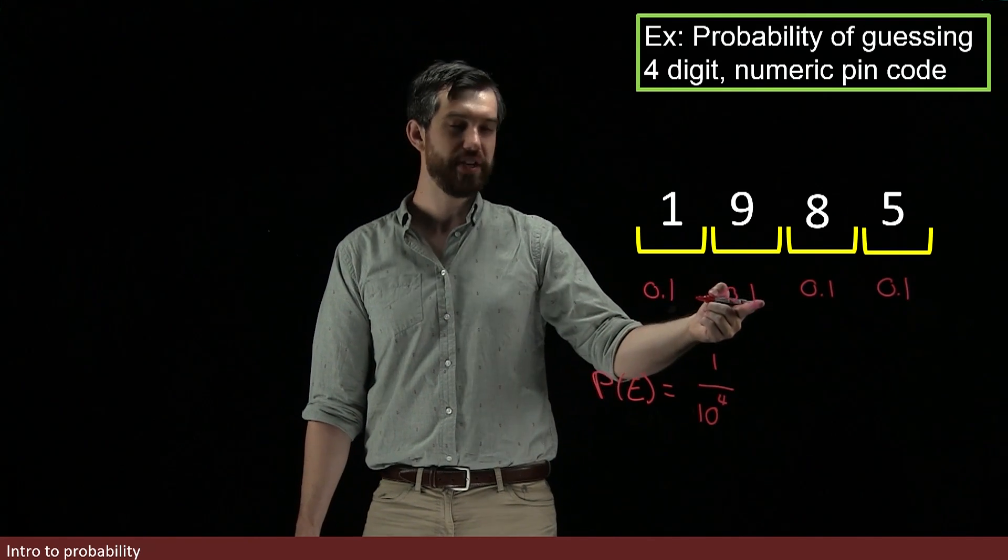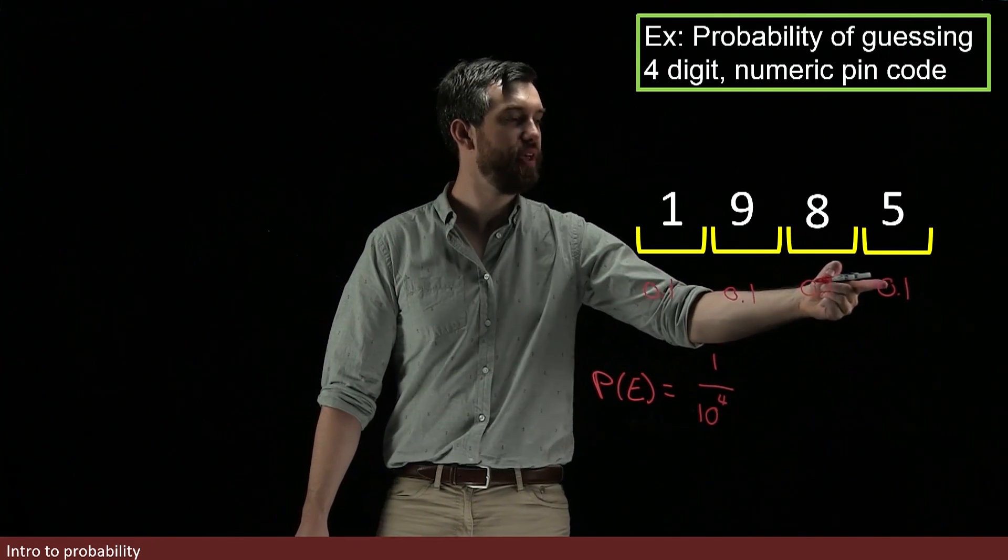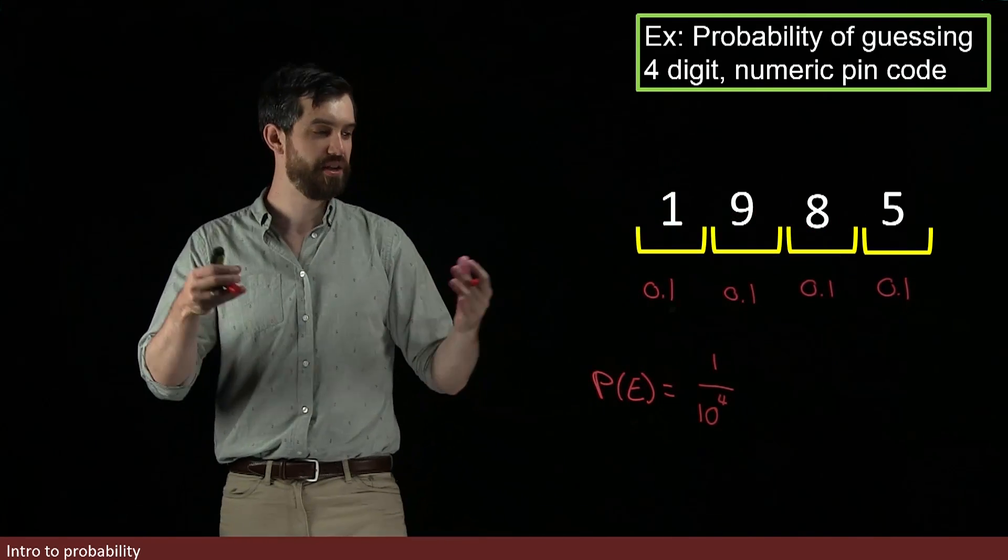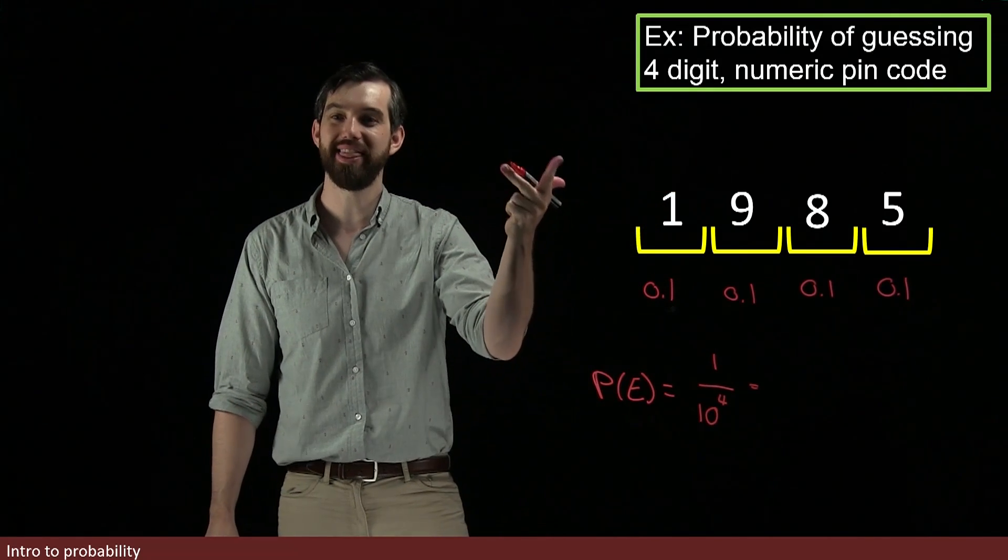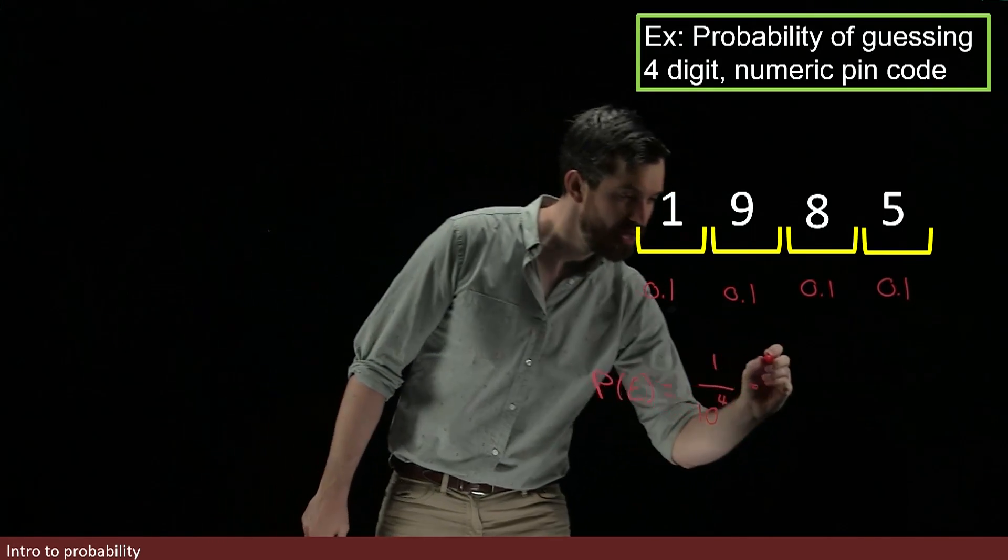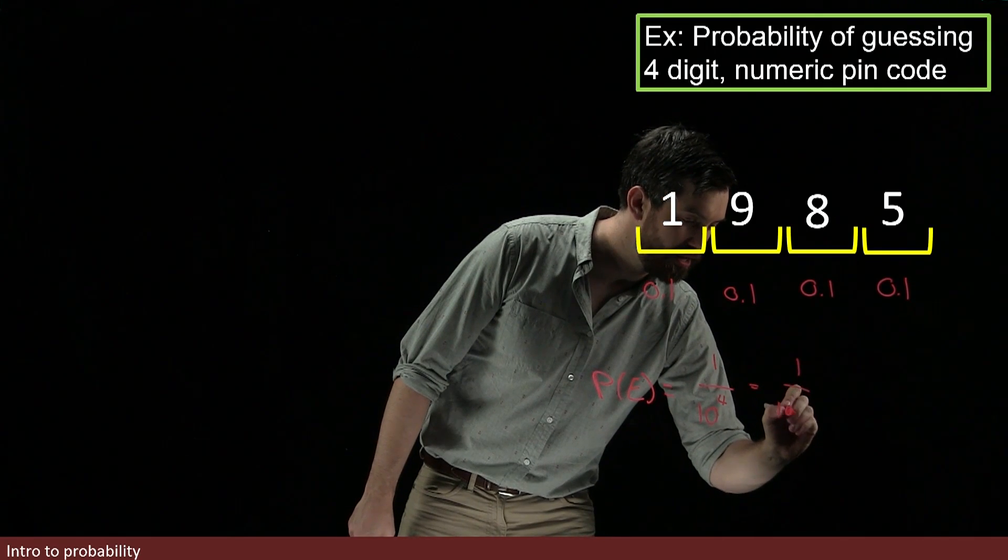Or in other words, it's this 1/10 times 1/10 times 1/10 times 1/10, so 1/10 to the power of 4. Or in other words, 1 divided by 10,000.